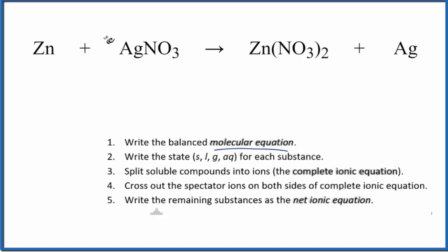To do that, it looks like we need a 2 here and a 2 here. So this is the balanced molecular equation for Zn plus AgNO3.